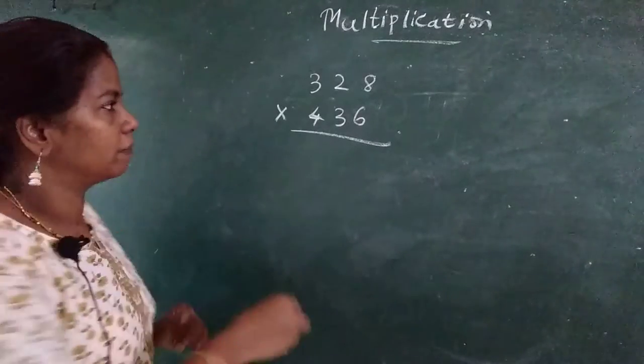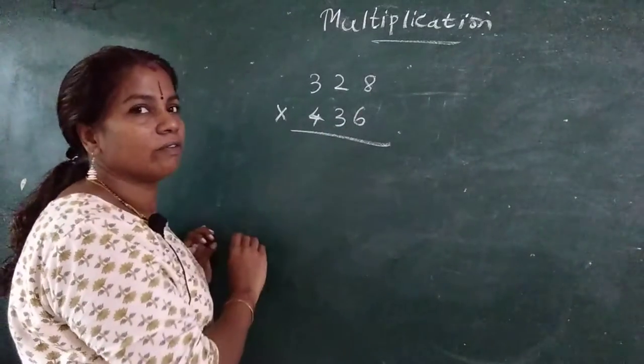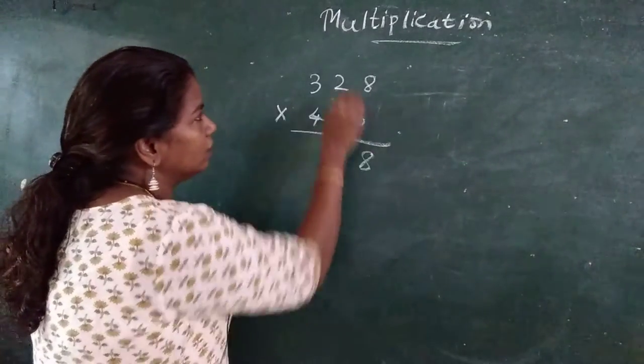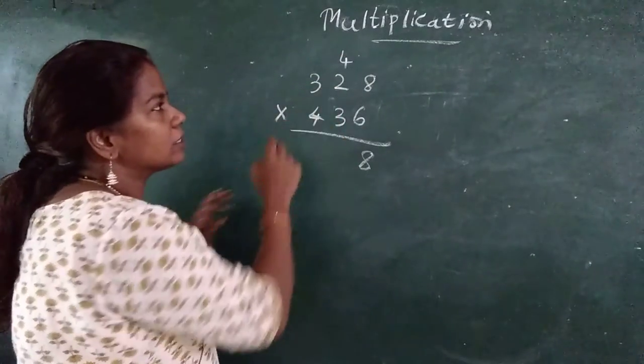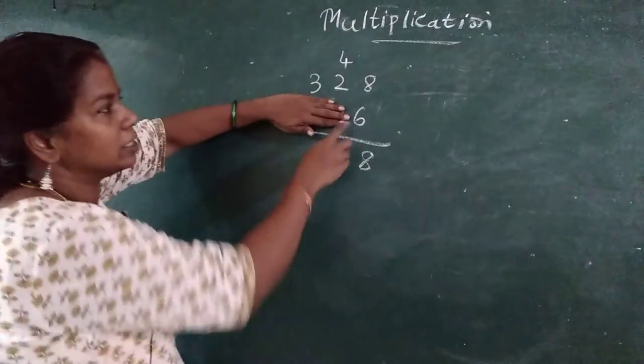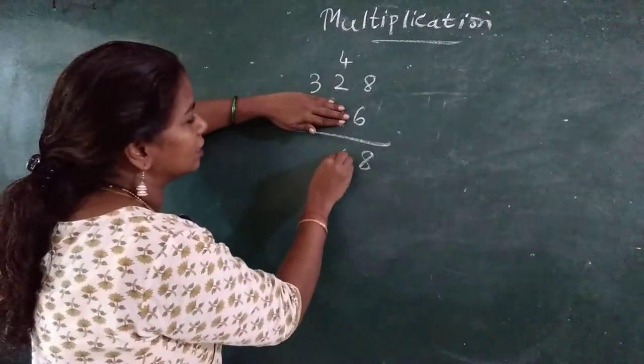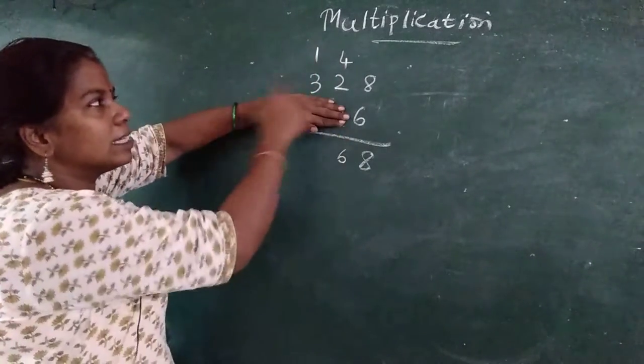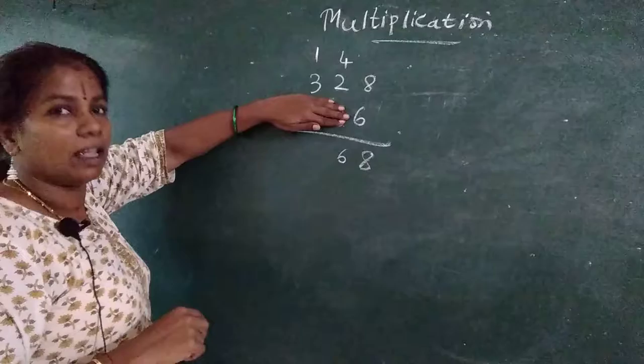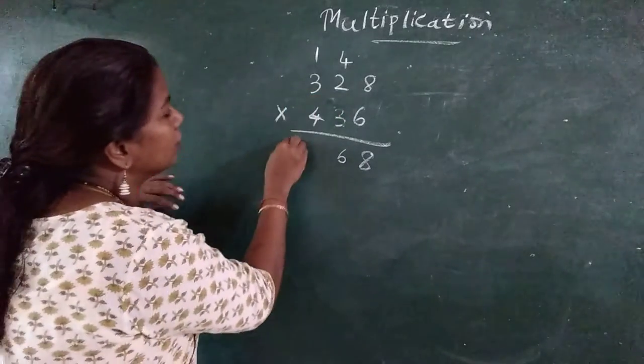First we started with units. 6, 8's are 48. Put 8 here, 4 carry. 6, 2's are how much? Forget about this. 6, 2's are 12. 12 plus 4, how much? 16. 6 here, 1 carry. 6, 3's are 18. 18 plus 1, 19.